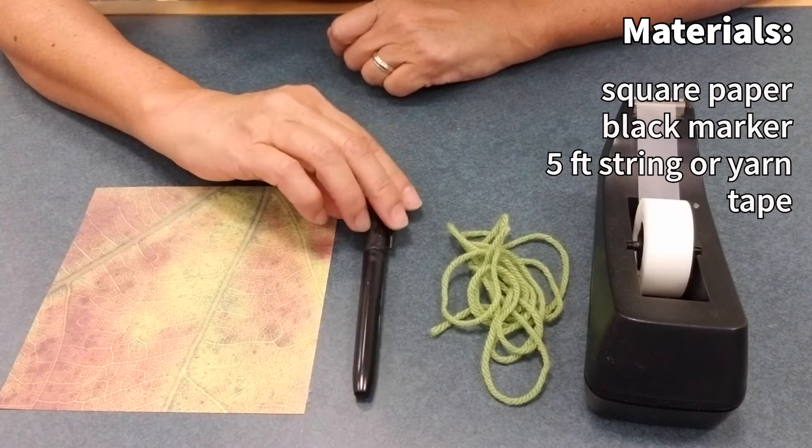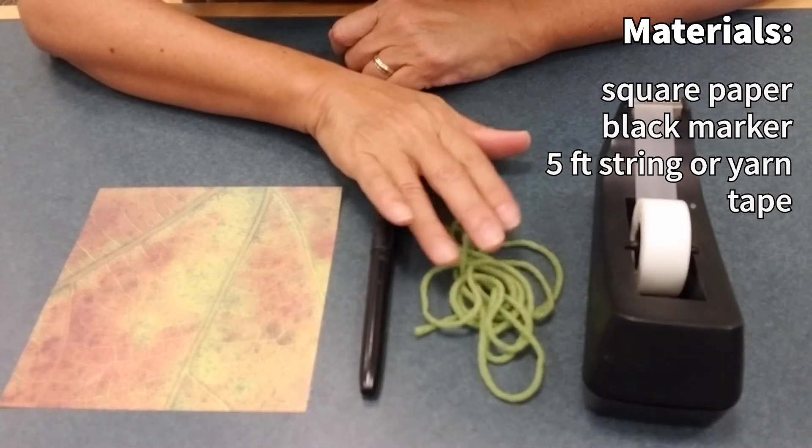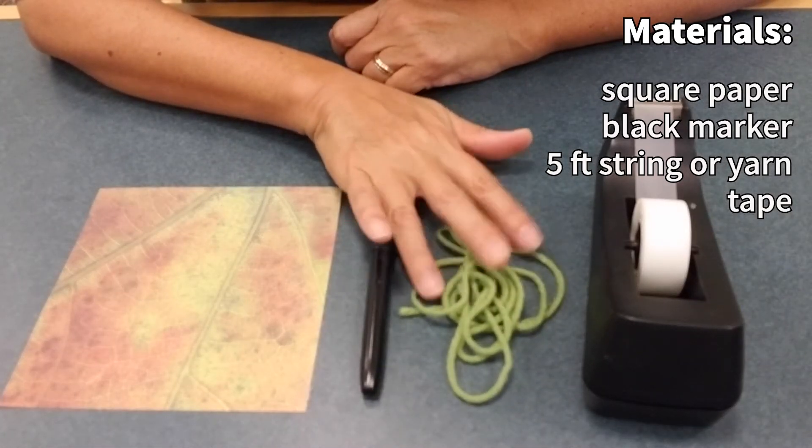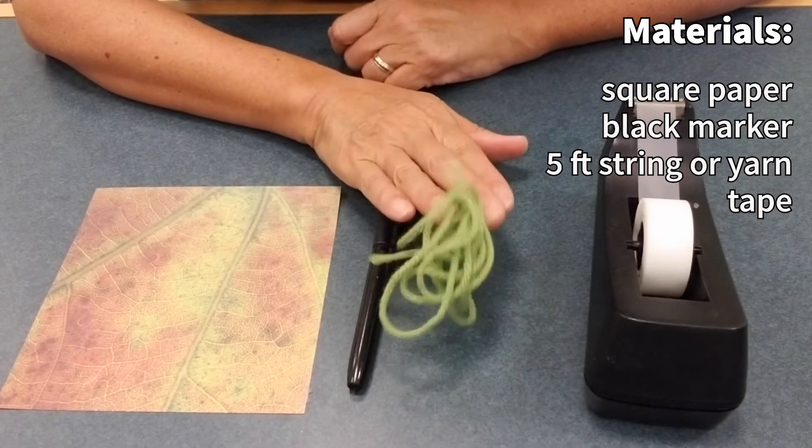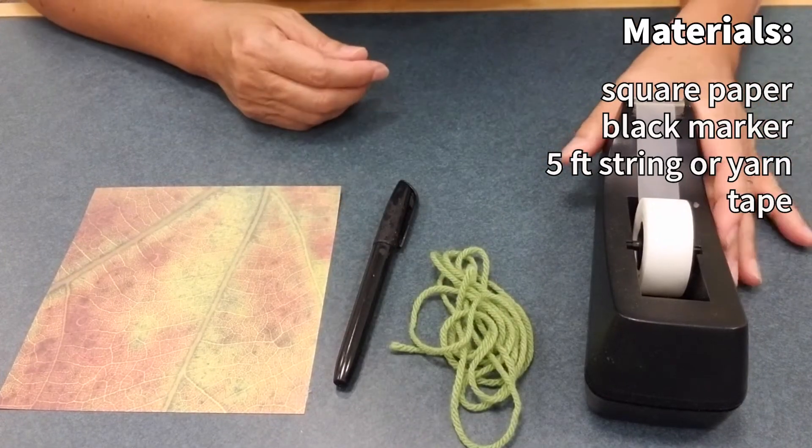Then you'll need a black marker, about five feet of kitchen string or yarn, and some tape.